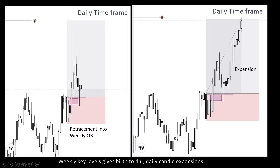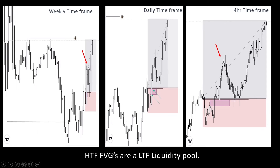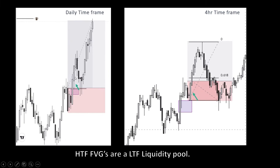When a daily candle expands, four-hour candles in those daily candles will also be expanding up. In this bearish weekly down candle there will be multiple daily down candles. Looking at the daily time frame, retracement into discount happened here and expansion to our weekly drawn liquidity followed. Here is an insight: high time frame FEG is your low time frame liquidity pool. Here you see a daily bullish FEG — the bullish FEG is between the first candle high and the third candle low.